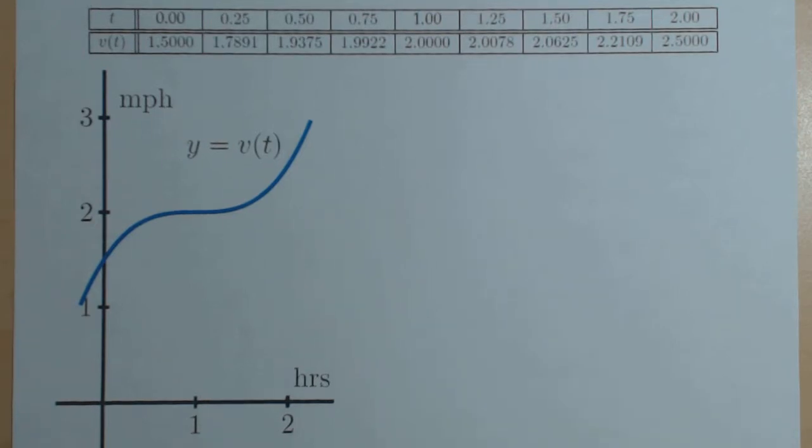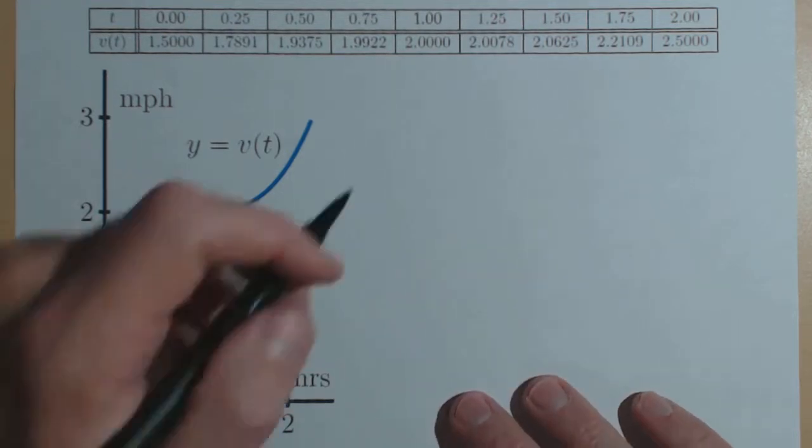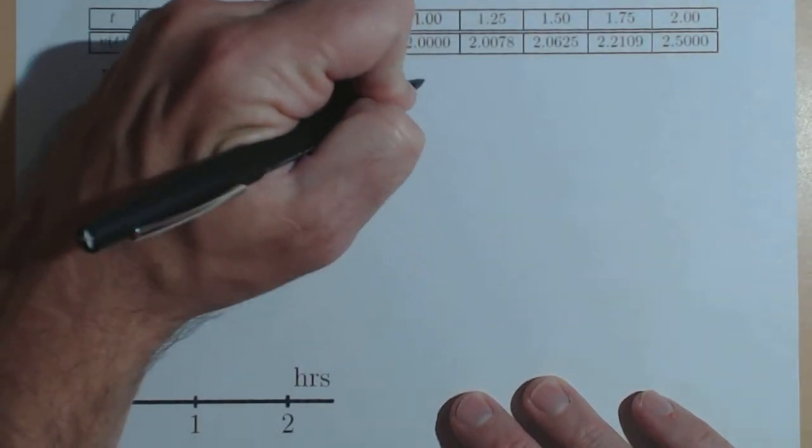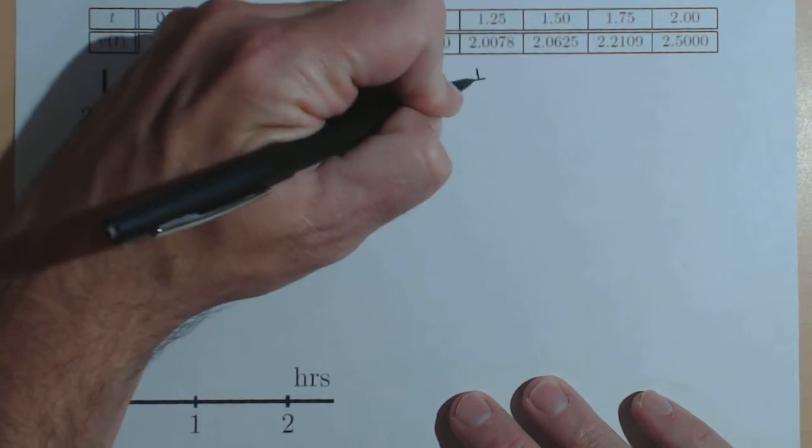We're going to use this graph and the notion that area under the curve will give us the distance traveled in order to estimate how far this person has traveled. For our first calculation, we're going to use delta t equals 0.5 or one half.